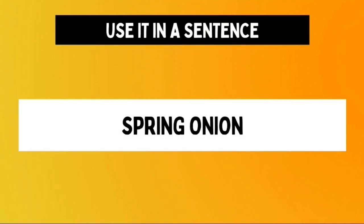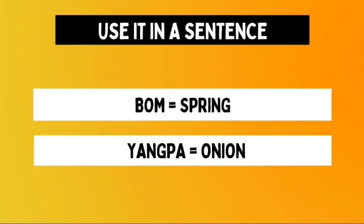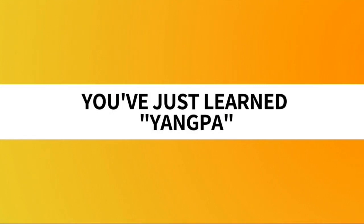Now let's look at this example: 'spring onion.' The Korean translation is bom yangpa. The first part is bom, which we already tackled on this channel and means 'spring.' The second part is yangpa, our word for today, which means onion. So bom yangpa means 'spring onion,' which is just a specific type of onion. And with that, you've just learned yangpa.